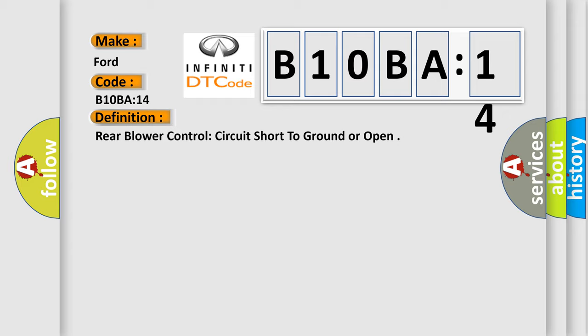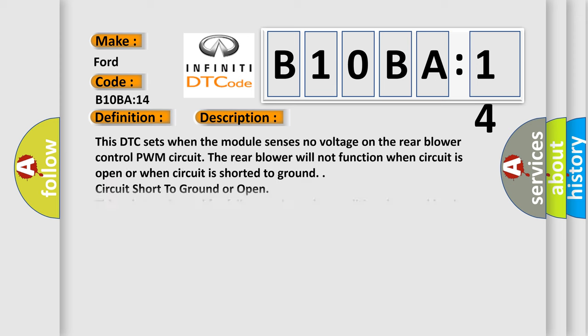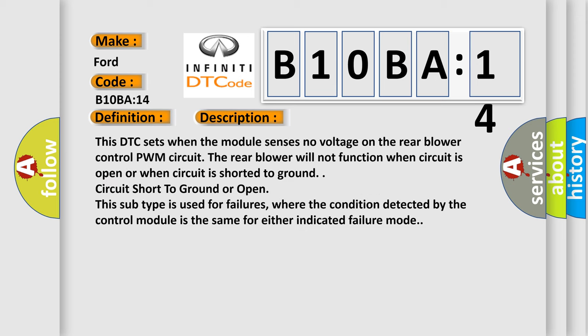And now this is a short description of this DTC code. This DTC sets when the module senses no voltage on the rear blower control PWM circuit. The rear blower will not function when circuit is open or when circuit is shorted to ground. This subtype is used for failures where the condition detected by the control module is the same for either indicated failure mode.